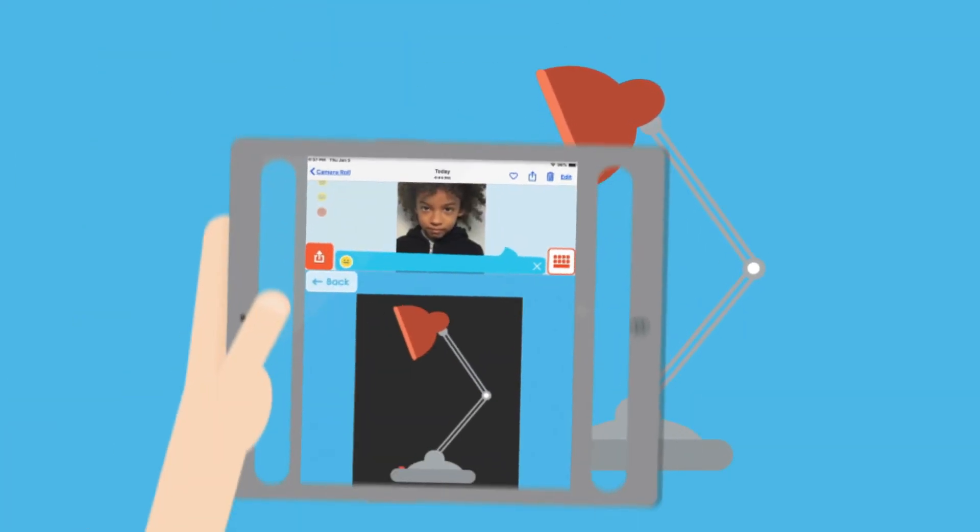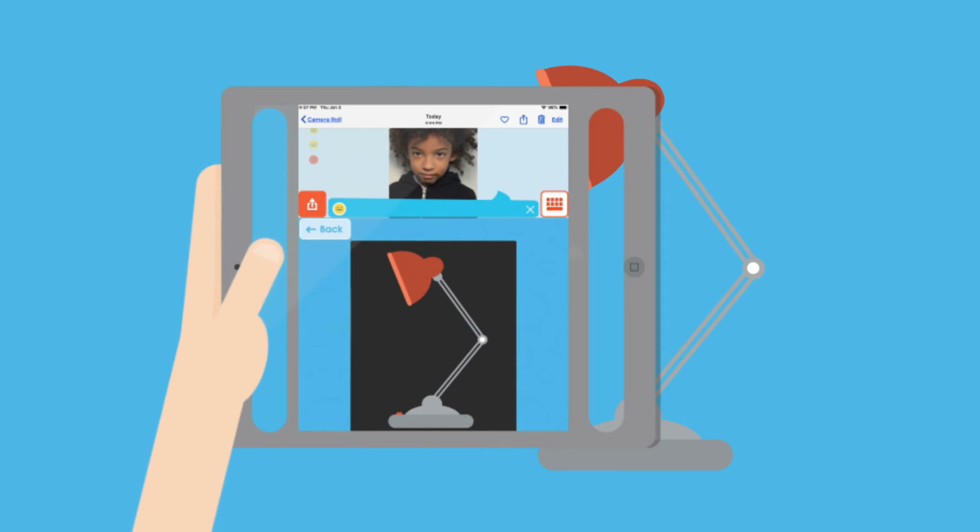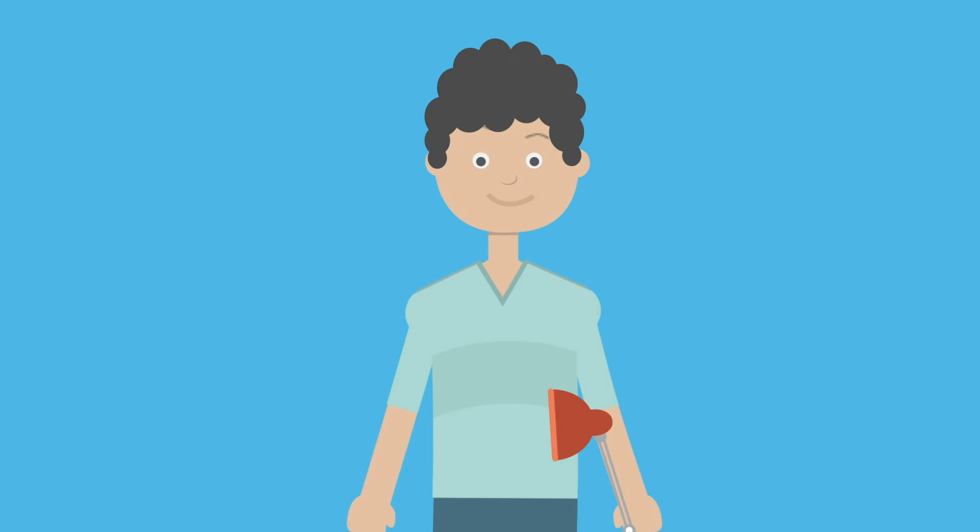Simply take a picture of something your child is looking at or interested in, which the avatar will label with speech and text, then watch your child imitate what they've heard.